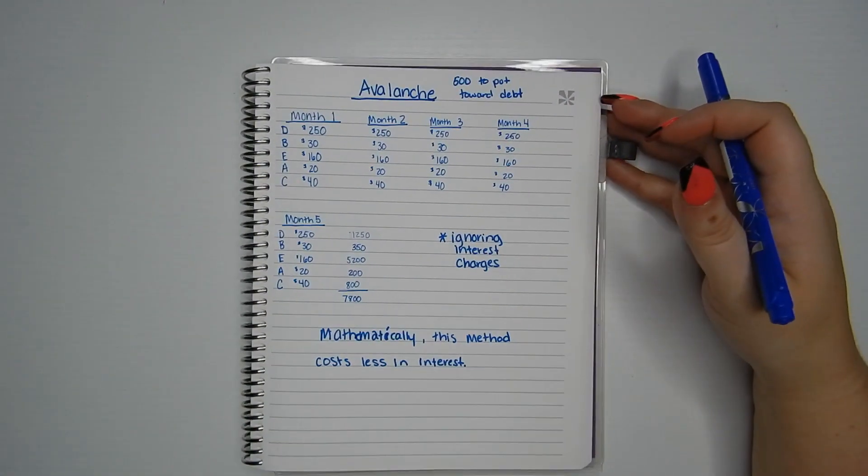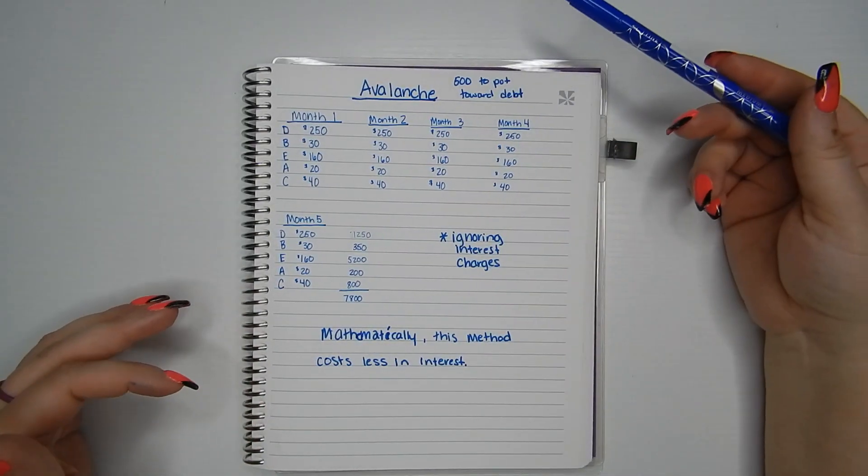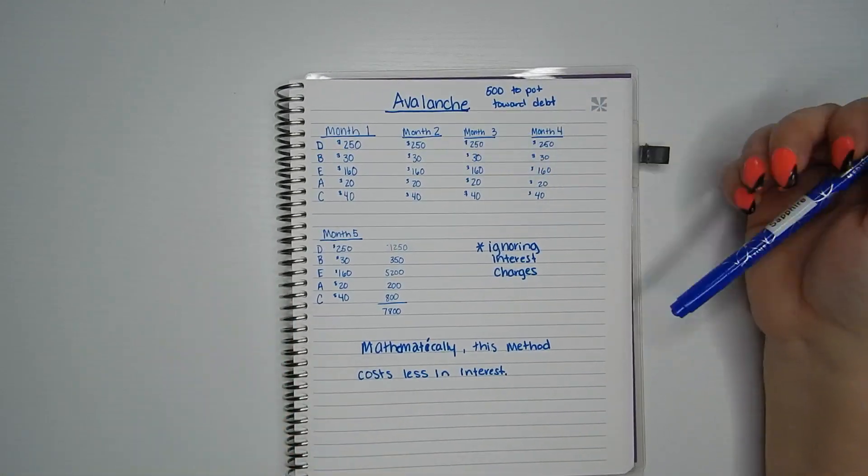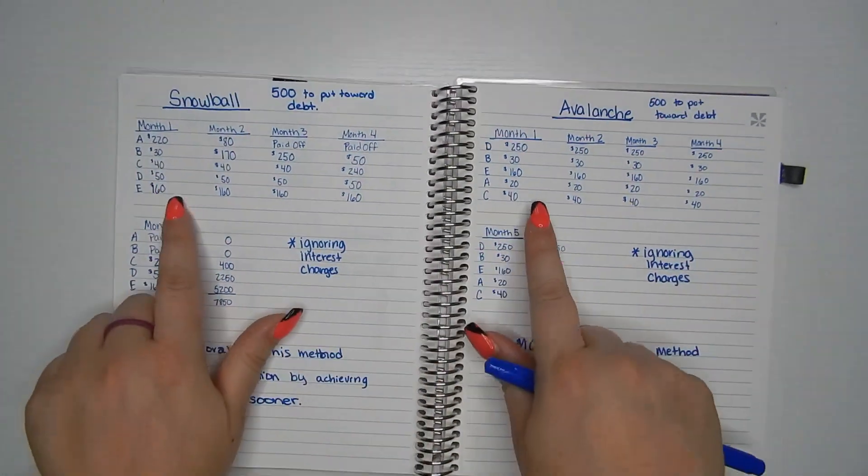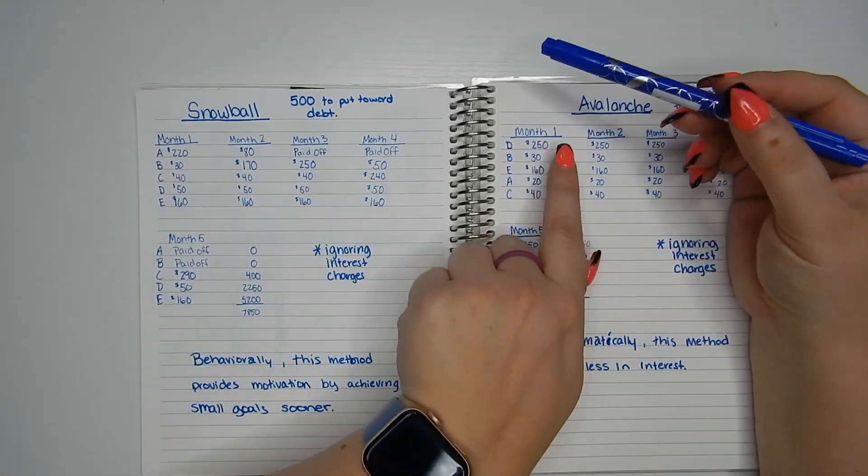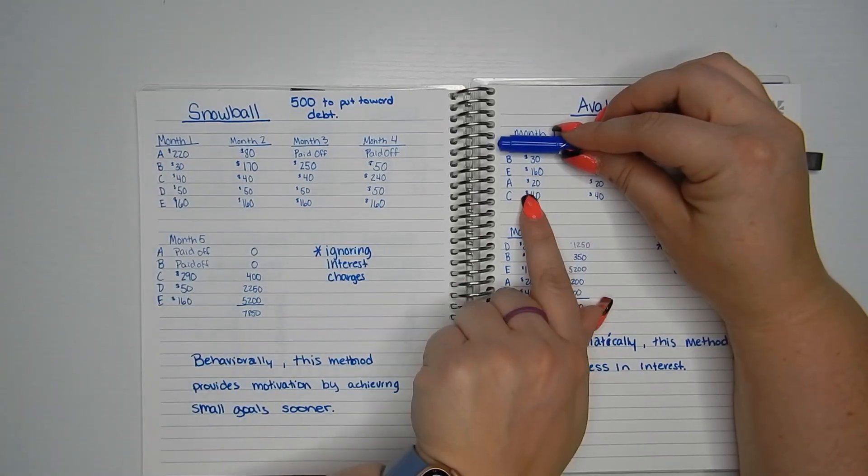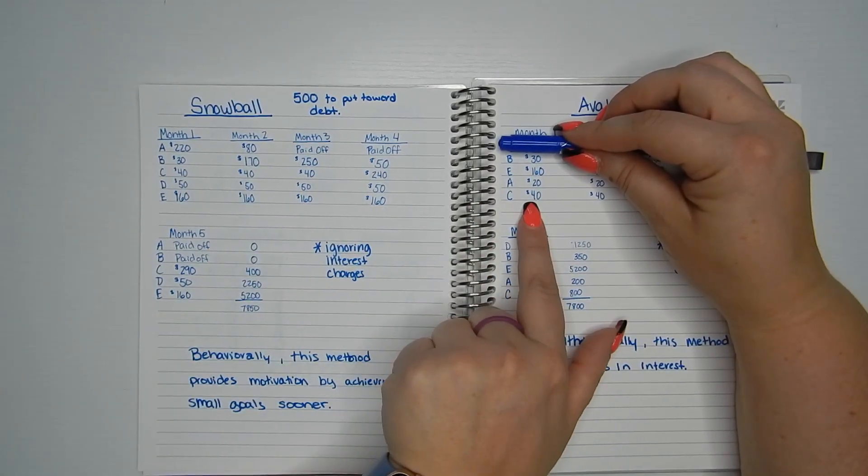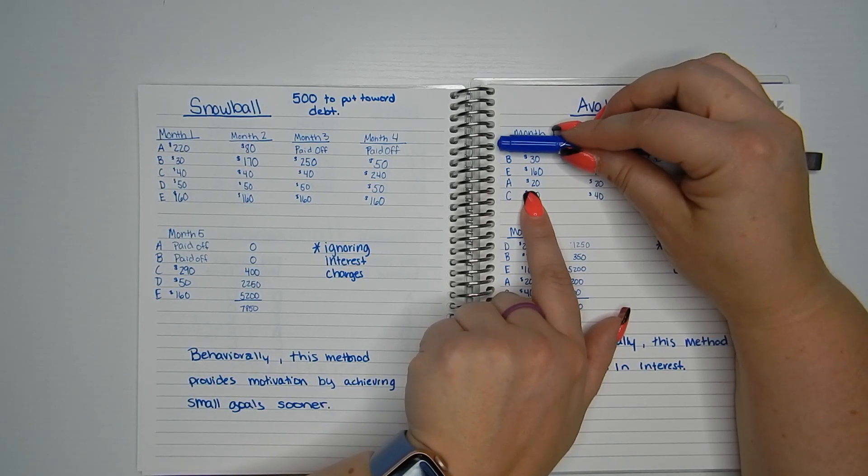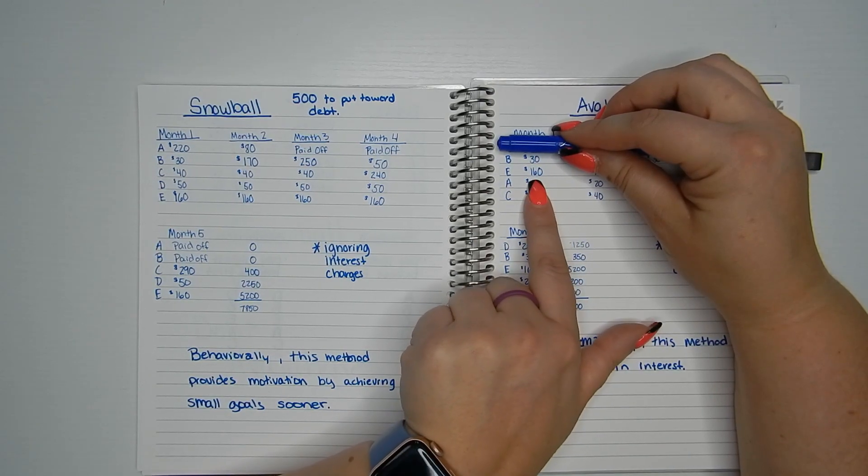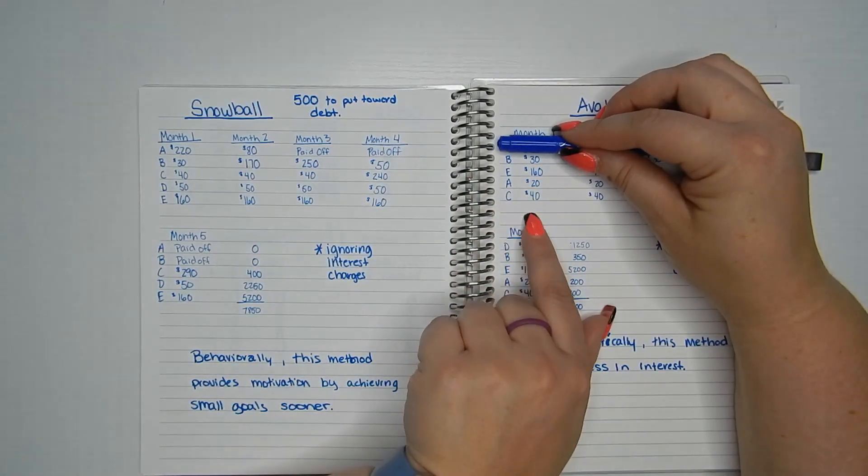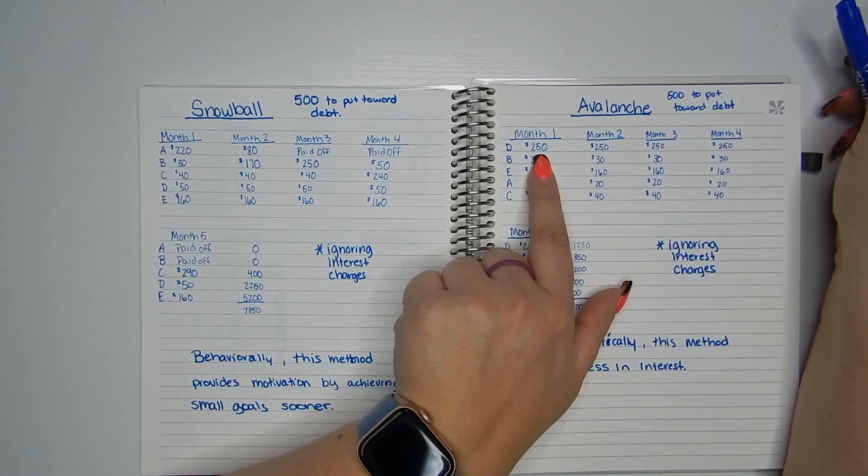Now let's take a look at Avalanche. I set up the same credit cards. We just changed the order we were focusing them on by the interest rate and we still have $500 to put towards debt. Month one looks similar, but not exactly. So card D is the one we're going to focus on. Card C had a $40 minimum. Card A had $20 minimum. Card E still has the $160 minimum and card B had a $30 minimum. So once we total all this up from the $500, we still have $250 to put towards card D.